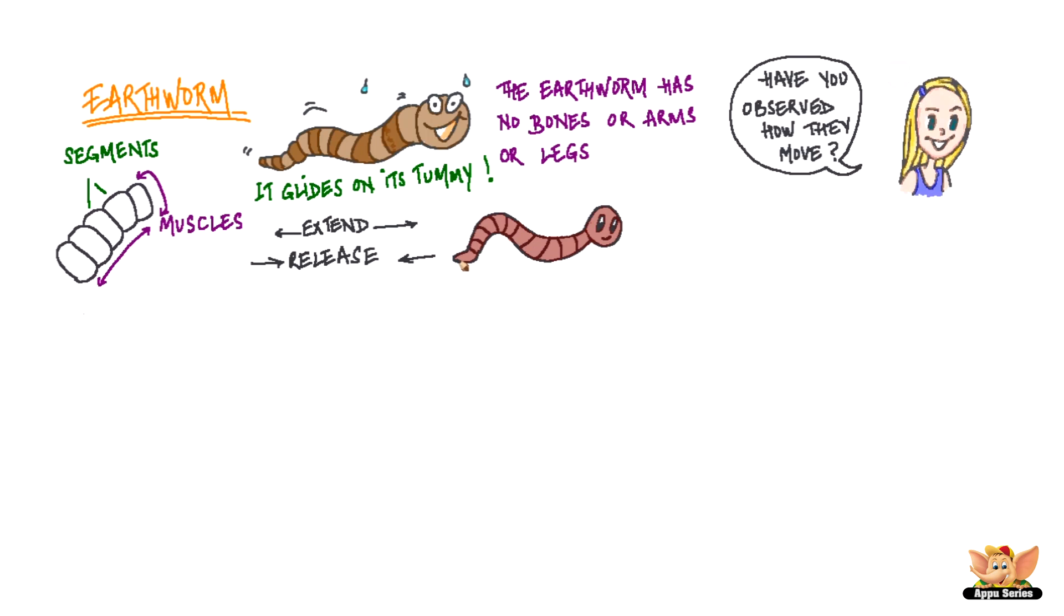When it moves, the earthworm first extends the front part of its body, keeping the rear fixed to the ground. It then fixes the front part and releases the rear. It moves slowly forward on the ground by repeating this process.